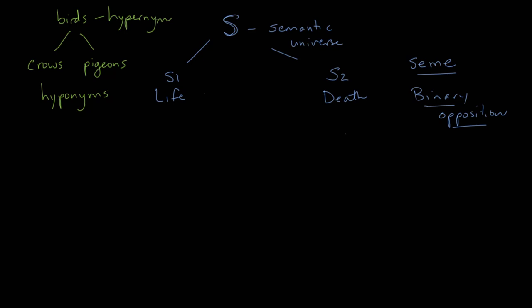So we haven't finished our square yet. We've got two corners of it, but we need the other two corners. And to create those we're going to take the opposite of these two terms, or at least the contradiction of these two terms. So the opposite, the contradiction of death, would be not death.